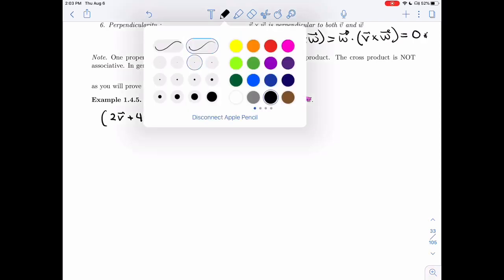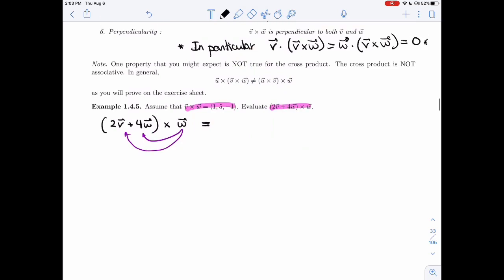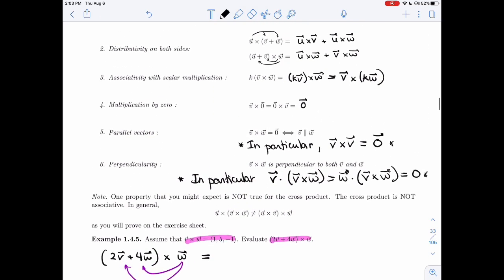All right, so first thing I should do is distribute. So I'm going to use distribution. That's the second property. So by the second property, I can take 2v cross w plus 4w cross w.